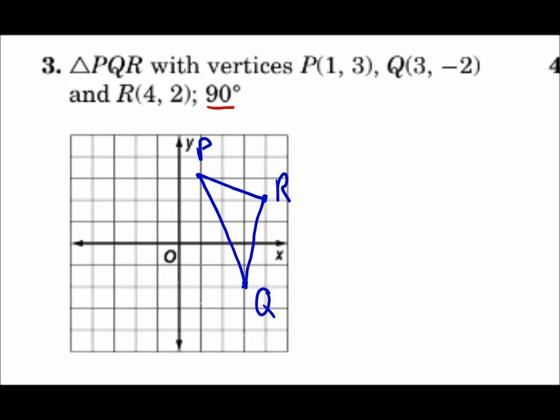I'll draw the image in red. Each point is rotated 90 degrees — remember, rotate the points and then connect the dots. What we're going to do is look at where each point is from the origin, because that's the center we're using, and then rotate and redraw it. To begin, point P is at (1, 3). If you turn 90 degrees, that's a quarter turn.